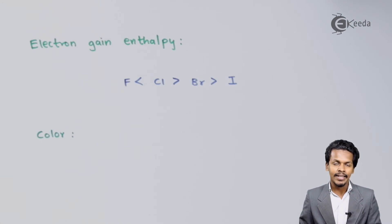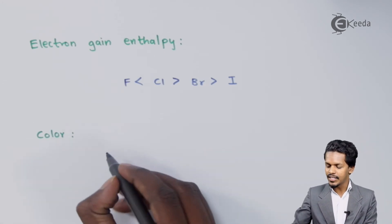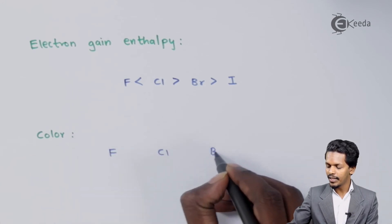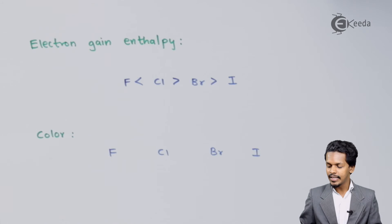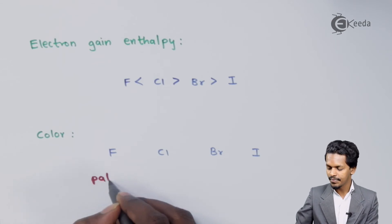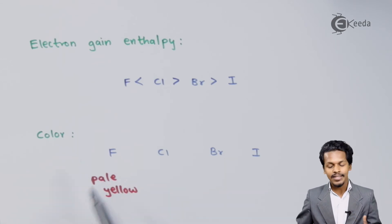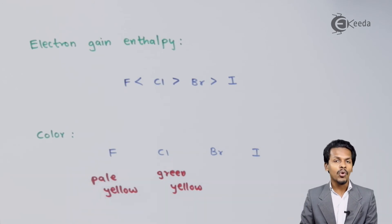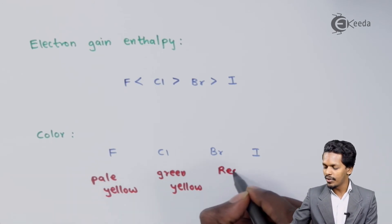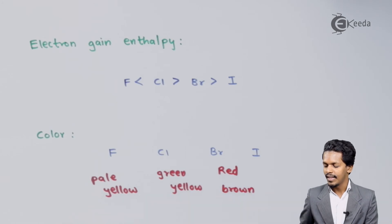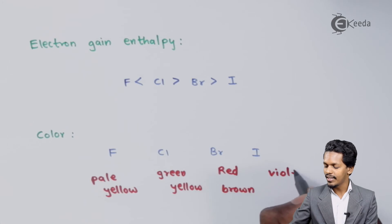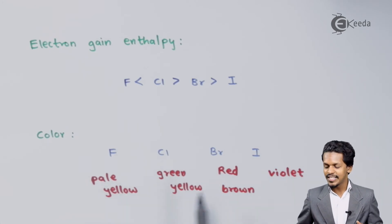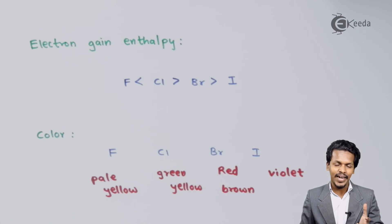Now let us discuss the color trends in group 17 elements. Fluorine at normal temperature is a pale yellow gas. Chlorine is a greenish-yellow gas. Bromine is a reddish-brown liquid. Iodine is a violet-colored solid. This is the trend in color changes observed across the group 17 elements.